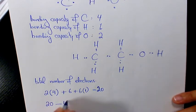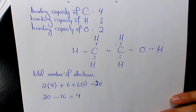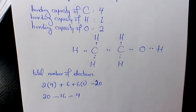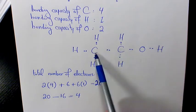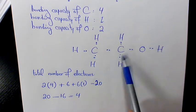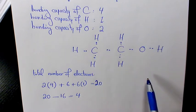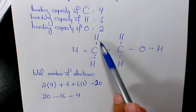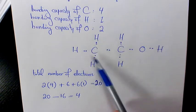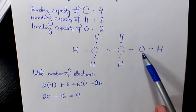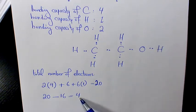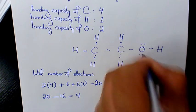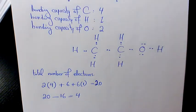These 4 remaining electrons need to be placed on the surrounding atoms. The central carbon already follows the octet rule because it is surrounded by 8 electrons. Hydrogen follows the duet rule with 2 electrons each. The only atom remaining is oxygen, so these 4 electrons belong to oxygen — forming 2 lone pairs.